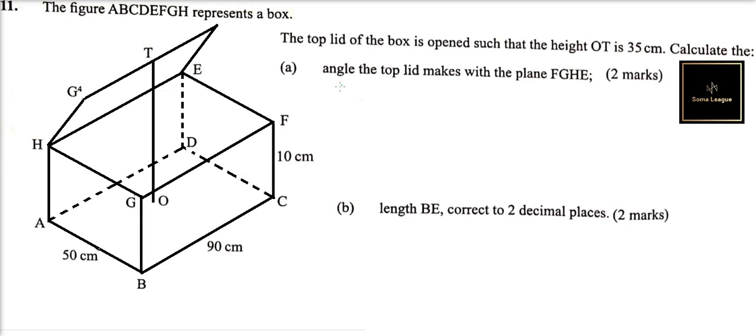The top lid of the box is opened such that the height OT is 35cm. Calculate the angle the top lid makes with the plane FGHE.